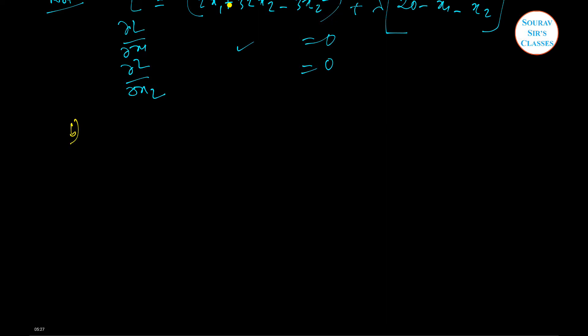In question B, suppose the price of x2 increases to 4, and all else remaining the same, which consumption bundle does the agent choose now? Find the new consumption bundle.